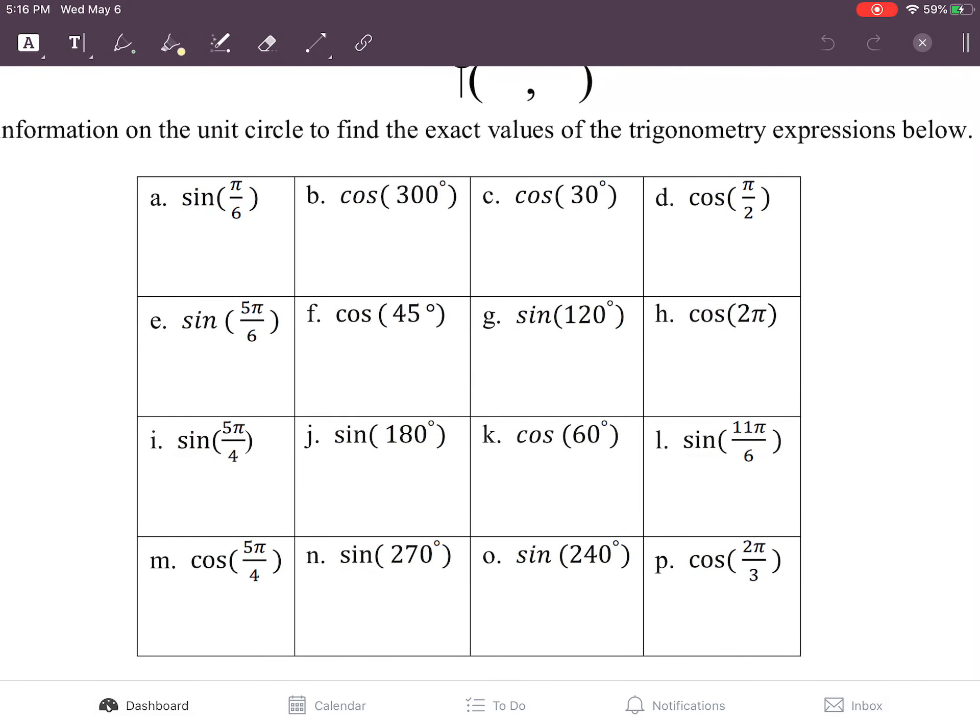So what you're doing in each one of these cases, you're looking at your unit circle at either the radians or the degrees and putting down either the y or the x term for sine or cosine.